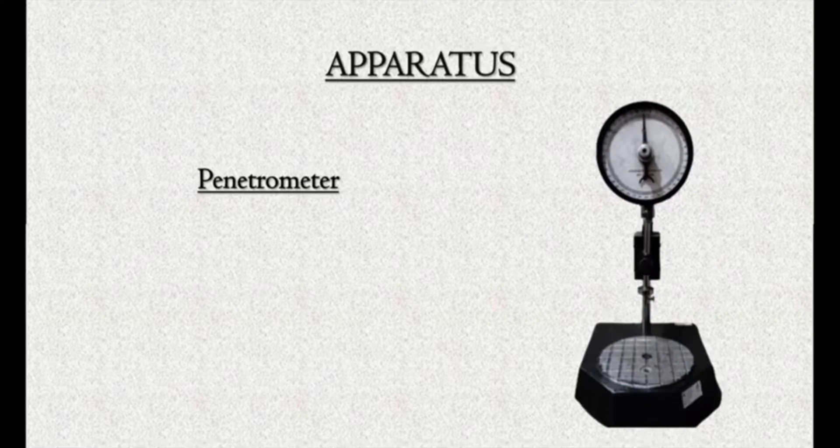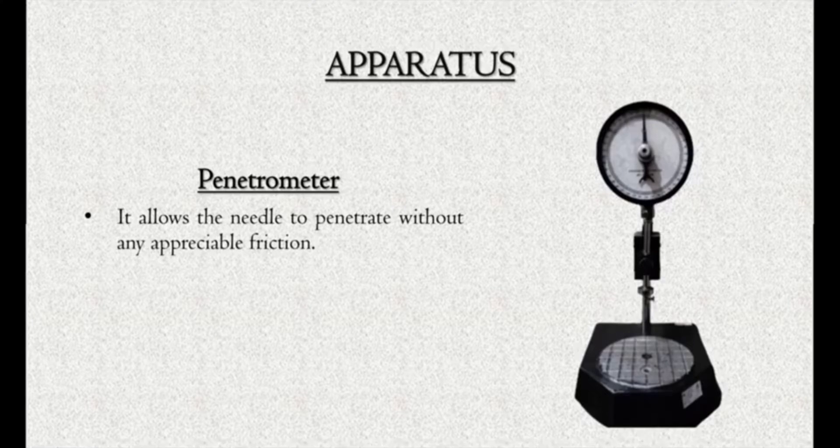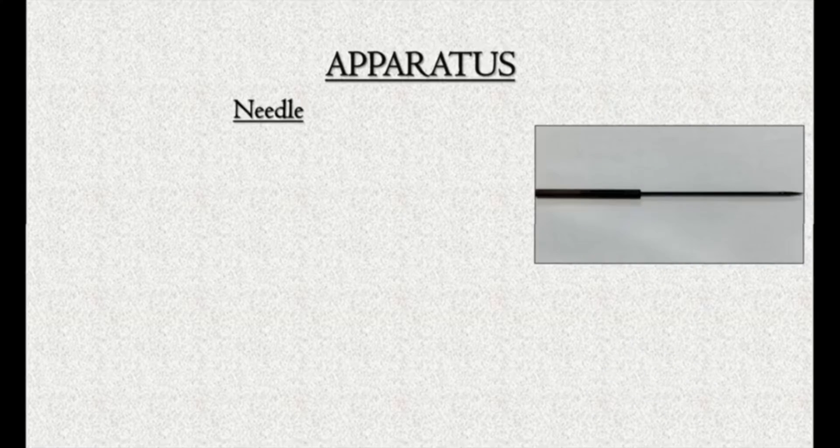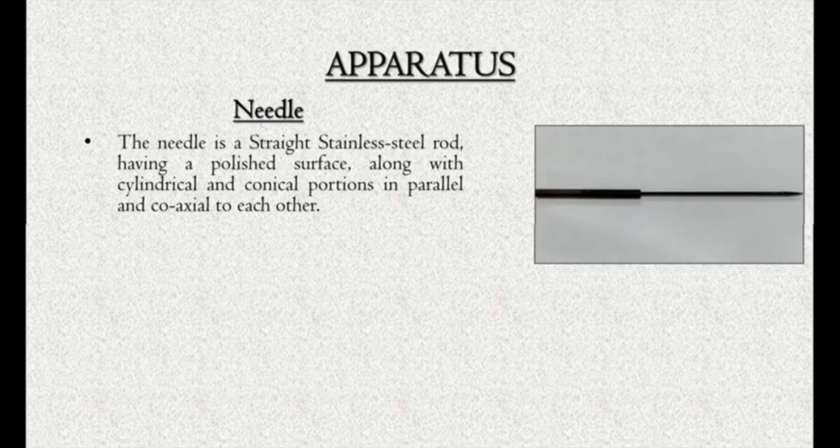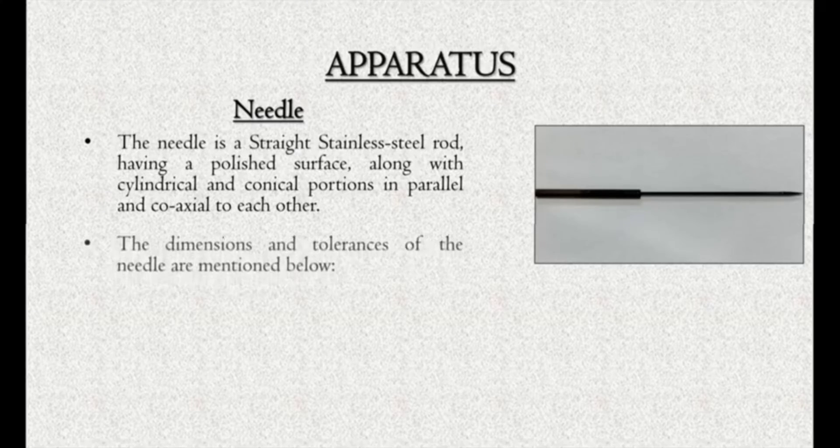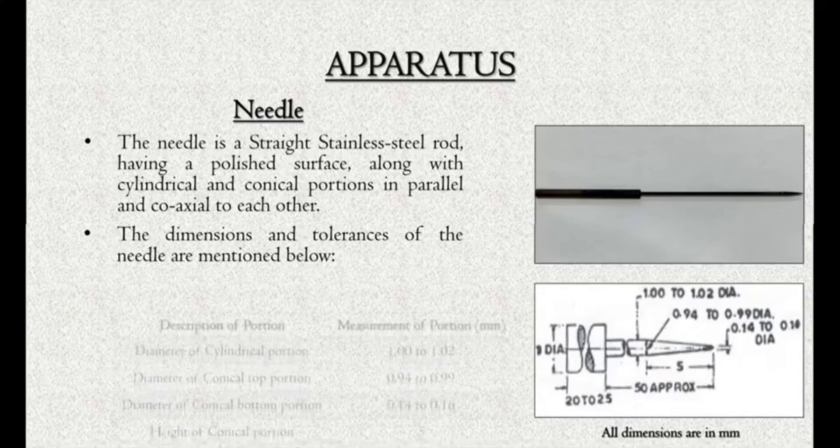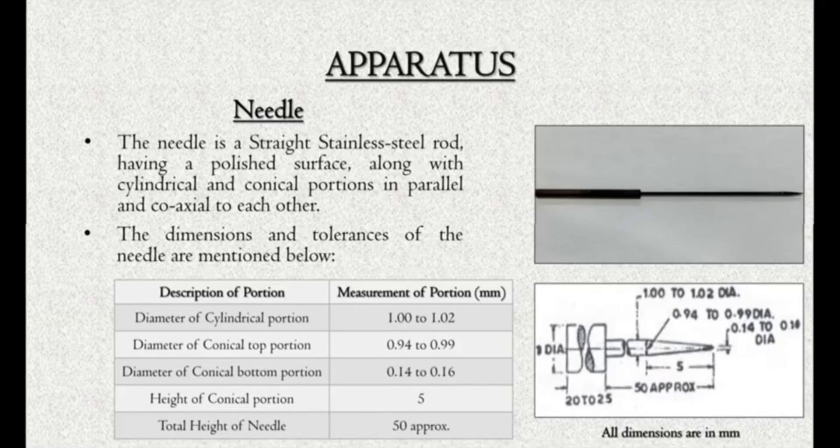Penetrometer: It allows the needle to penetrate without any appreciable friction. Its accuracy is measured in one-tenth of millimeter. The needle is straight, stainless steel rod having a polished surface along with cylindrical and conical portions parallel and coaxial to each other. The dimensions and tolerances of needle are mentioned below: Diameter of cylindrical portion, diameter of conical portion, diameter of conical bottom portion, height of conical portion, total height of needle.